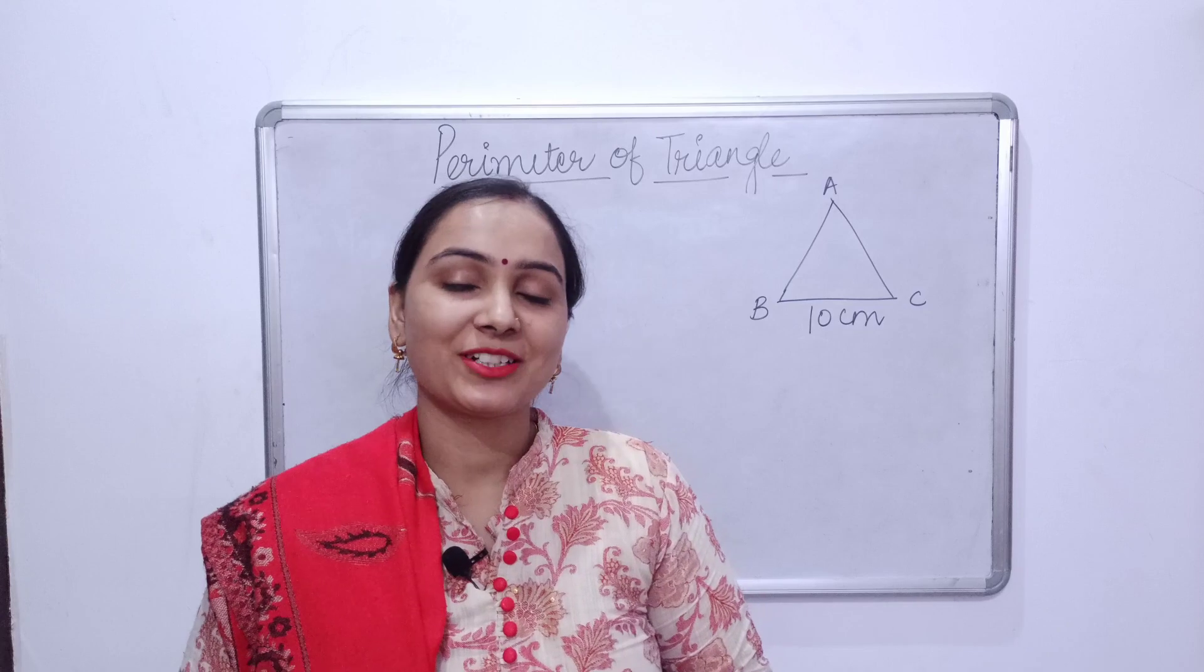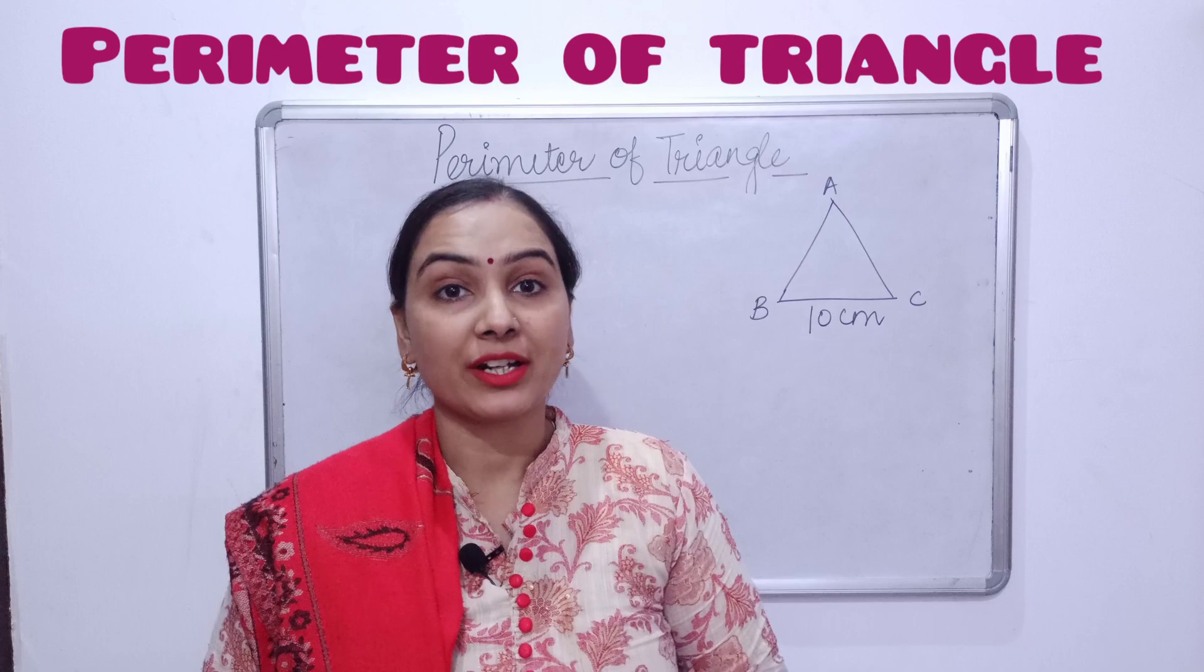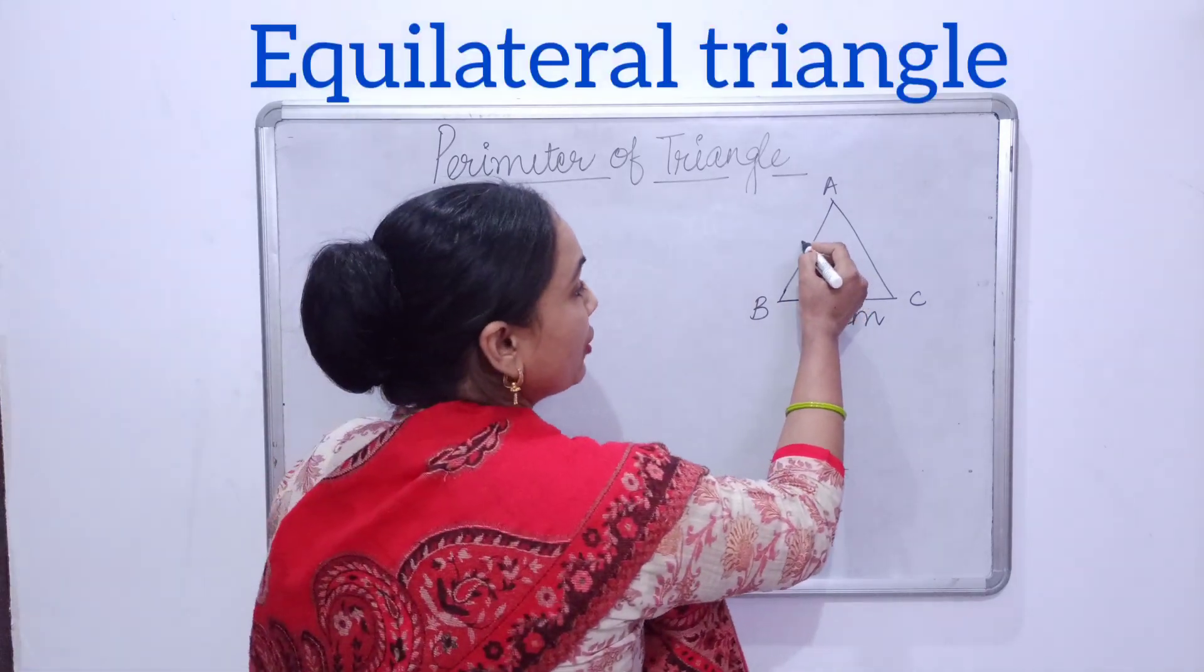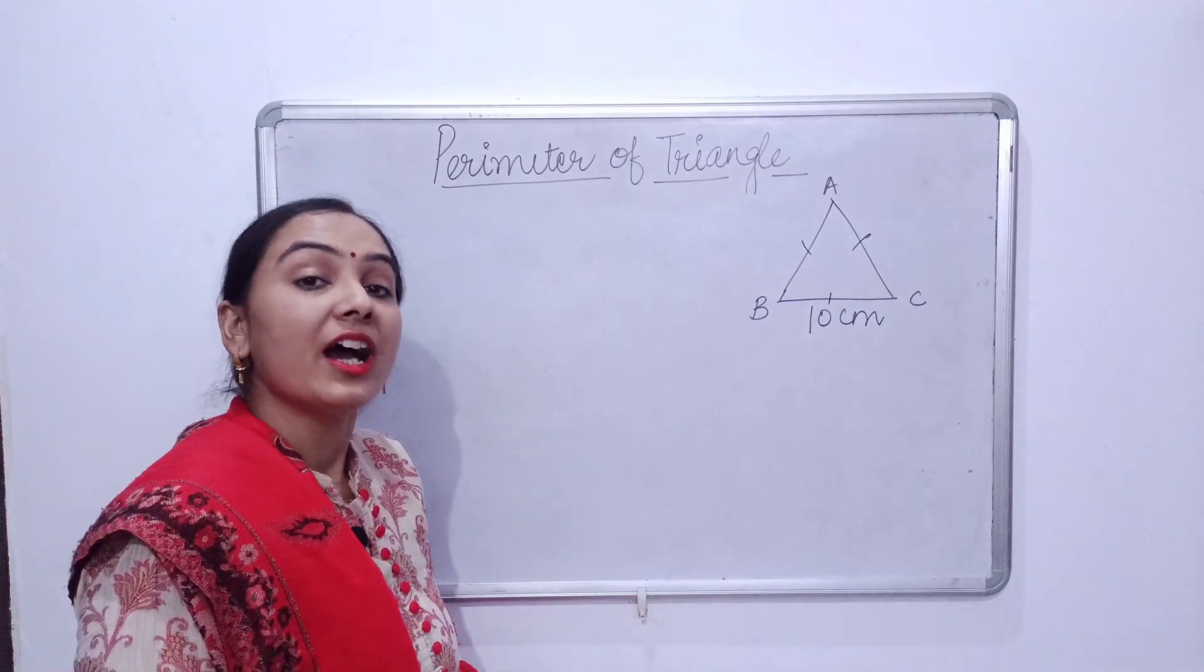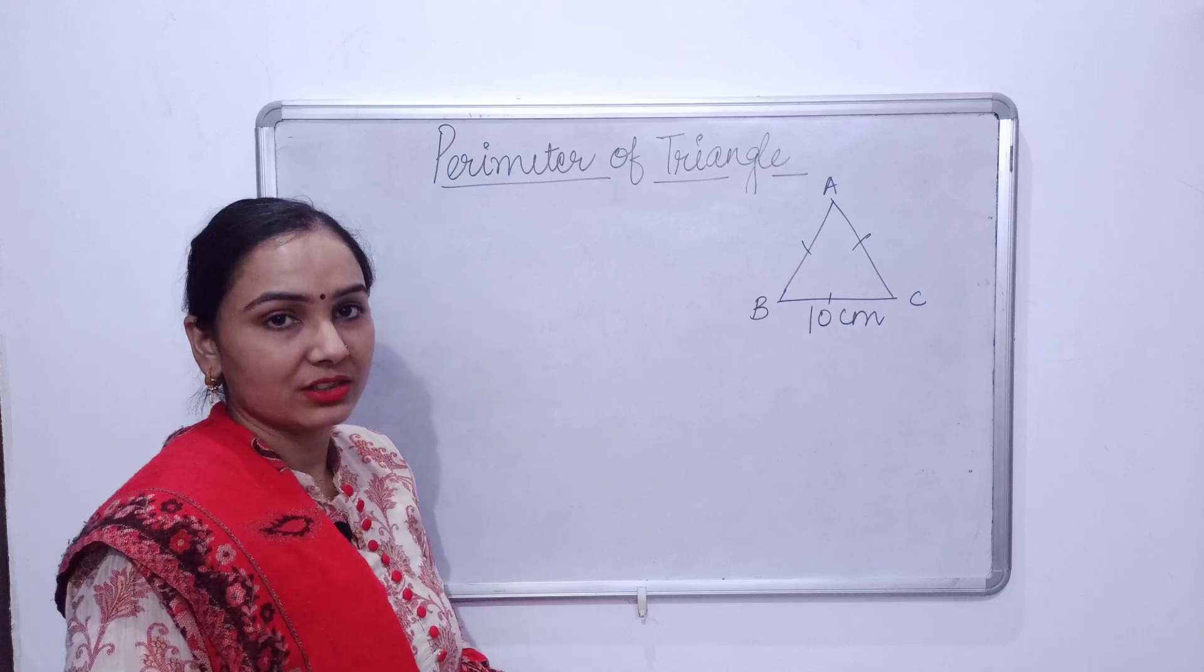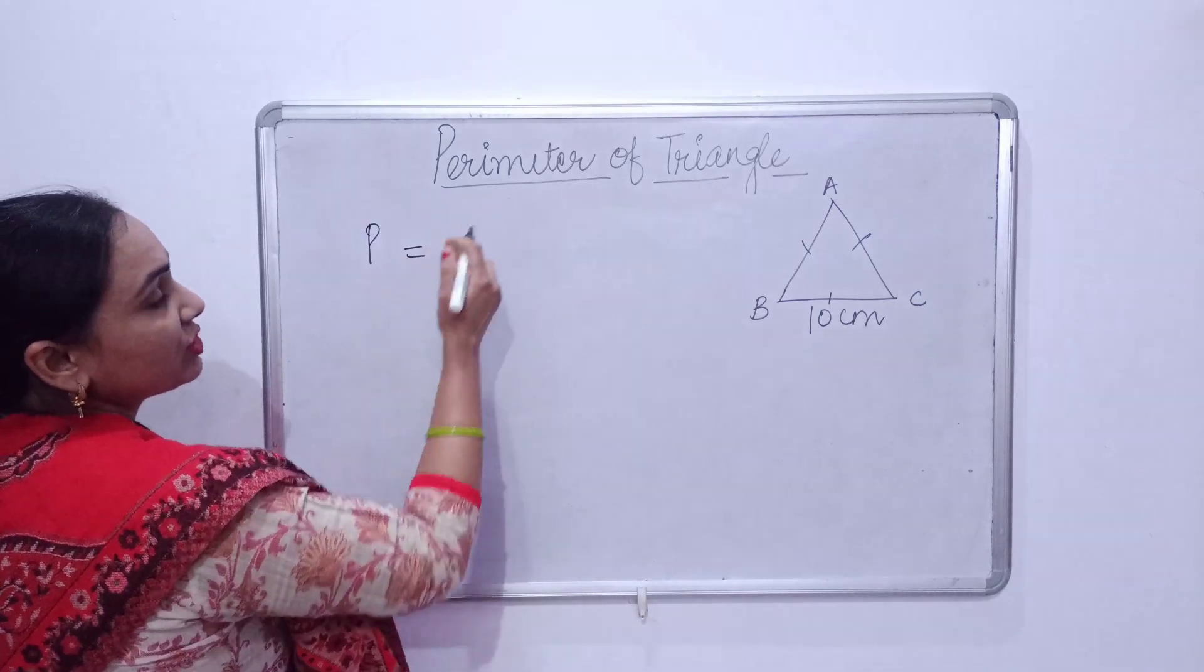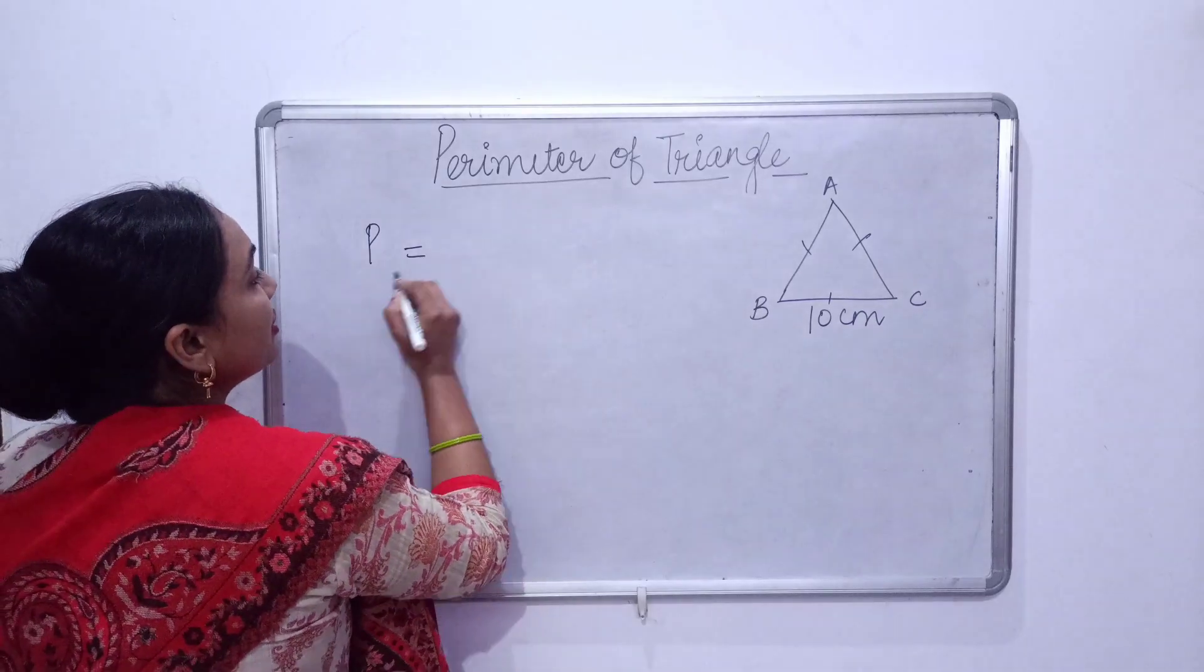So friends, welcome back. Let's start another topic, that is perimeter of triangles. Here we have an equilateral triangle of side 10 centimeter, and as we all know that sides of an equilateral triangle are equal.